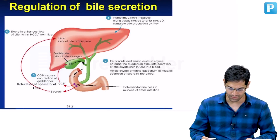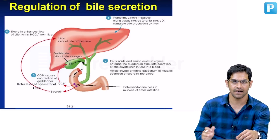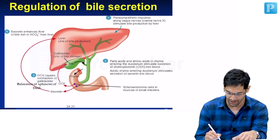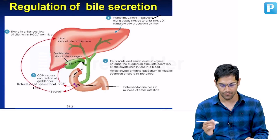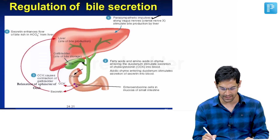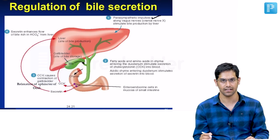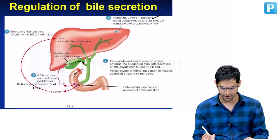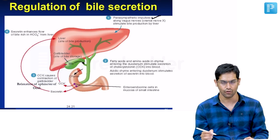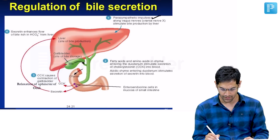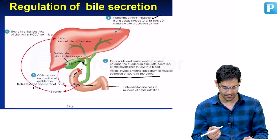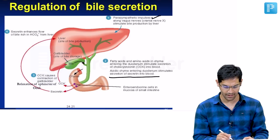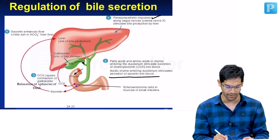Regarding regulation of biliary secretion: initially, parasympathetic impulses stimulate the production of bile from the liver. Fatty acids and amino acids entering the duodenum cause release of secretin and cholecystokinin (CCK). CCK causes contraction of the gallbladder and release of bile.